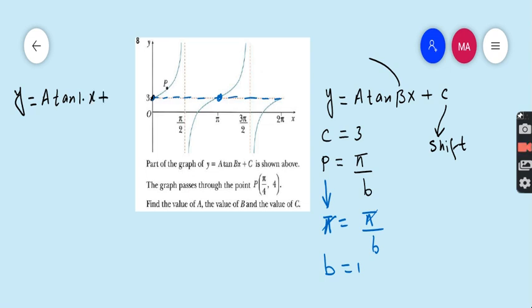Therefore, our given equation y equals A tan(Bx) + C. B is 1, 1 times X, plus C. C we have already found is 3. So y equals A tan(1 × X) + 3, or y equals A tan(X) + 3.